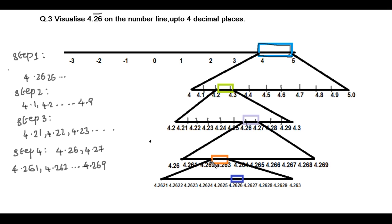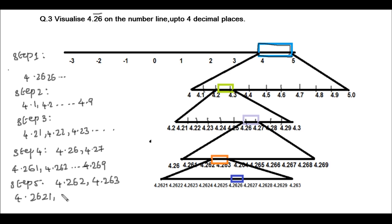From the third digit we understand it is 4.262, so in step 5 we divide the region between 4.262 and 4.263 into 10 equal parts: 4.2621, 4.2622, and so on up to 4.2629. From this we can locate 4.2626 on the number line.